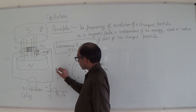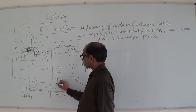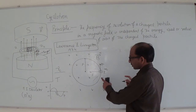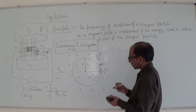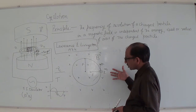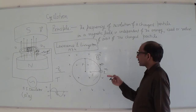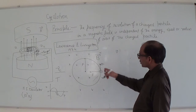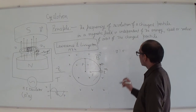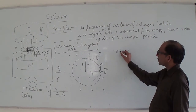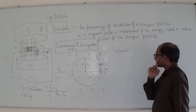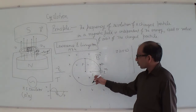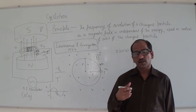That frequency is represented by mu_C. This is the time period and this is the frequency of the cyclotron. Before that, I want to mention one more important point: when a charged particle enters into a uniform magnetic field perpendicularly, it follows a circular path where V is the velocity, R is the radius of that circle, omega is the angular velocity, and the relationship between these is V equals R*omega. The magnetic force behaves like a centripetal force.